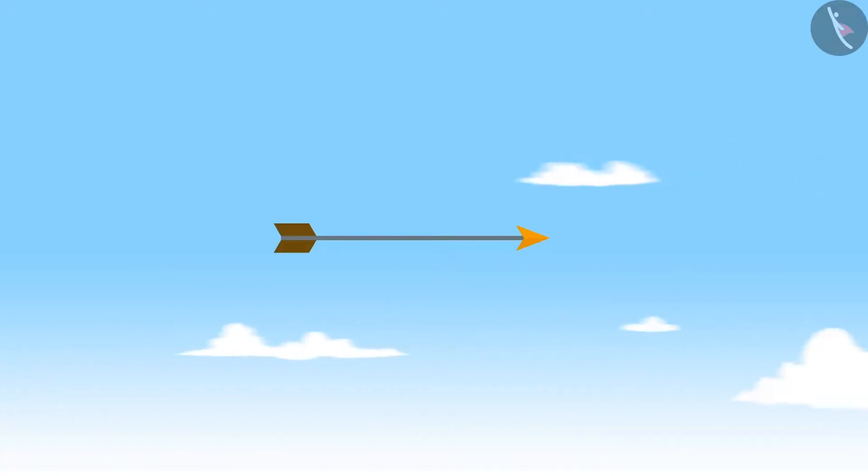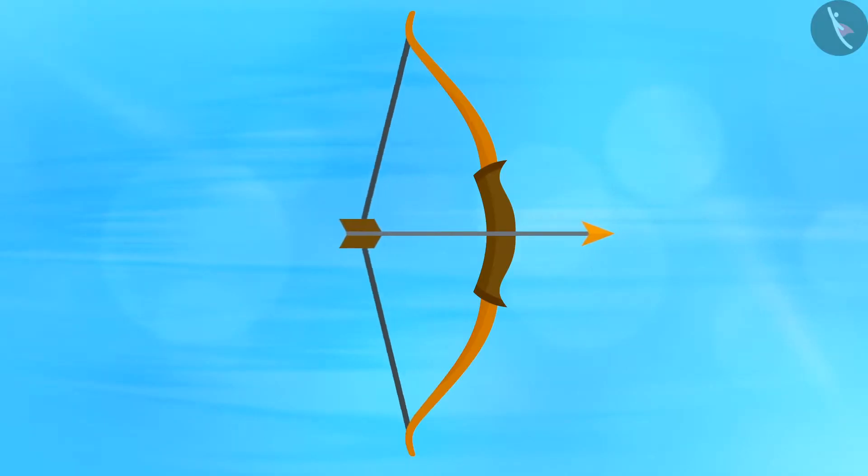You will notice that the arrow flies off to a certain distance. The bow stores the potential energy when the bow string is stretched. And then, this energy changes to the kinetic energy of the flying arrow.